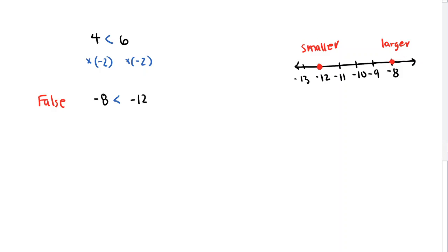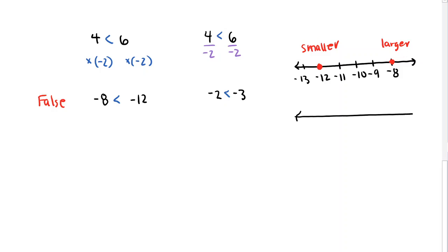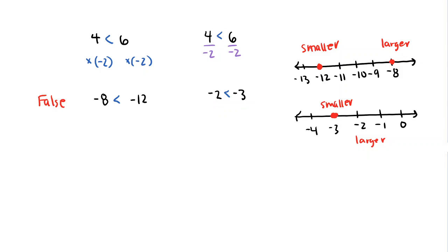The same thing happens when we take a true inequality and divide by a negative number. If I divide 4 is less than 6 by negative 2, we end up with negative 2 is less than negative 3. This is also false — we can draw the same picture: negative 3 is to the left of negative 2, so negative 3 is the smaller value. But that's the opposite of what the inequality says, so this is again a false inequality statement.